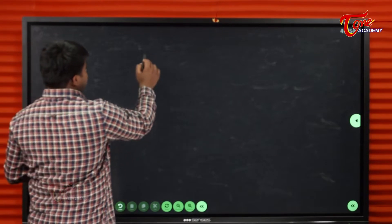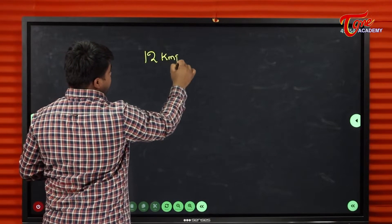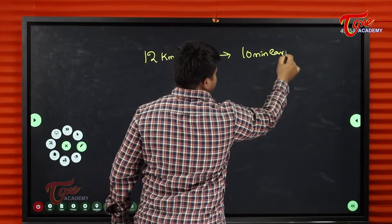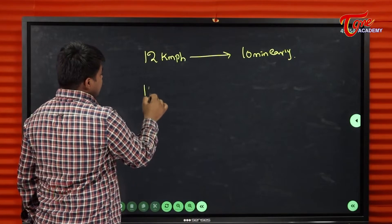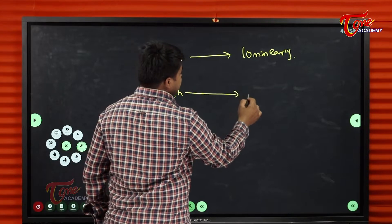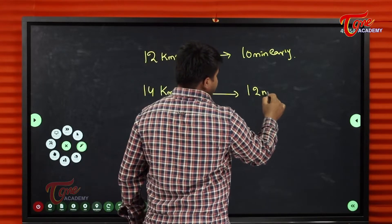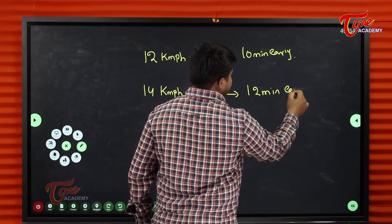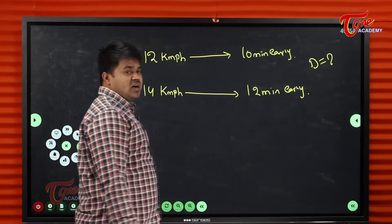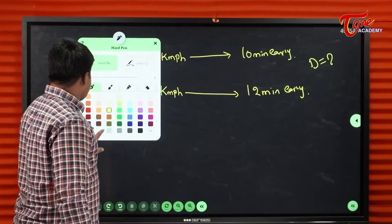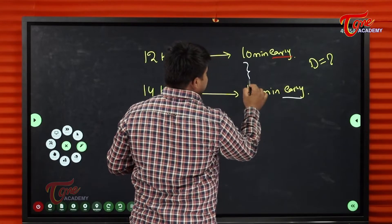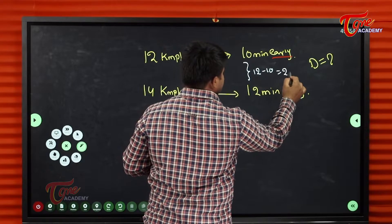Example 2: A man moves with a speed of 12 kilometers per hour and reaches the destination 10 minutes early. If he moves at 14 kilometers per hour, he reaches the destination 12 minutes early. Find the distance. Since both cases are early, we subtract: 12 minus 10 equals 2 minutes difference.